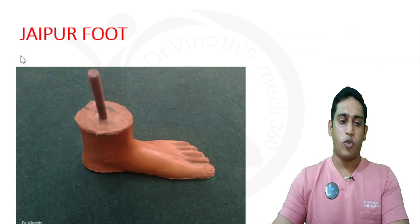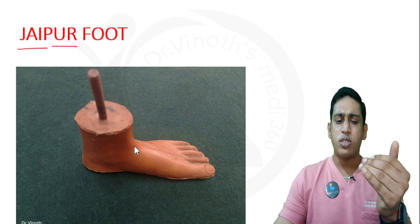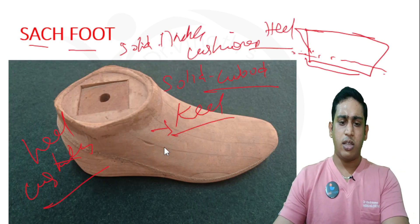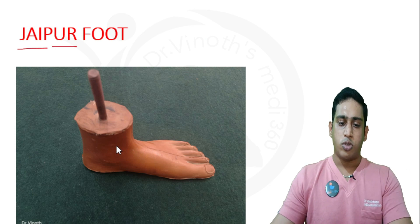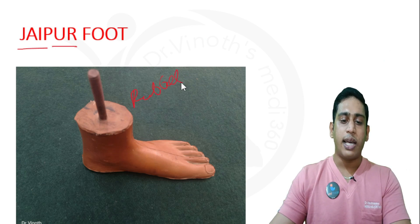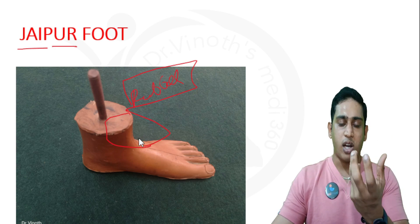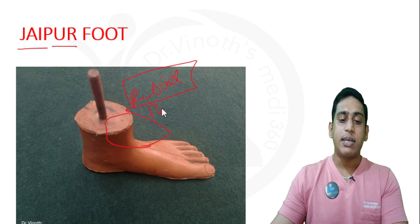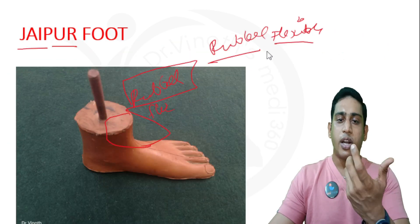The next one is called the Jaipur foot, since it is made in a medical college in Jaipur. At first look, the Jaipur foot looks somewhat similar to the actual limb — like a foot actually. It is made up of a rubberized or vulcanized rubber material. The keel part, which takes the shank of the prosthesis, is made up of a flexible rubber material. So here the keel or ankle region is flexible, whereas in the SAC foot it is rigid — that is why it is called 'solid.'